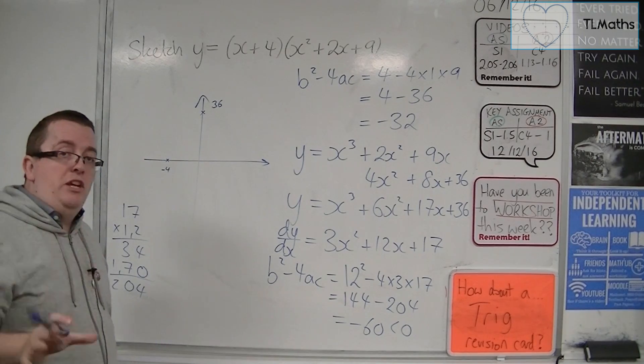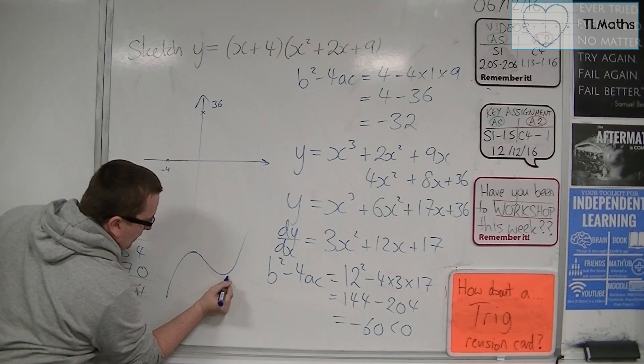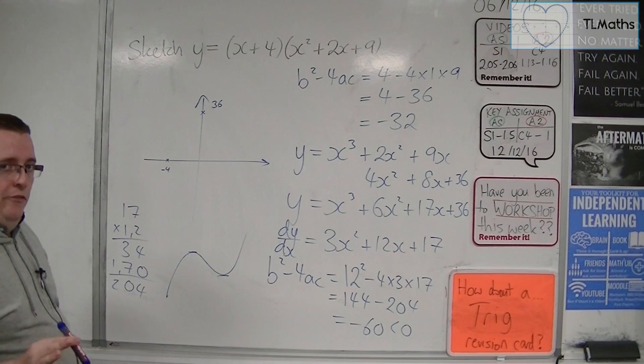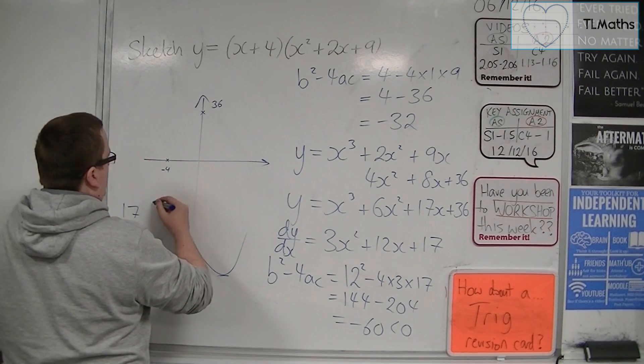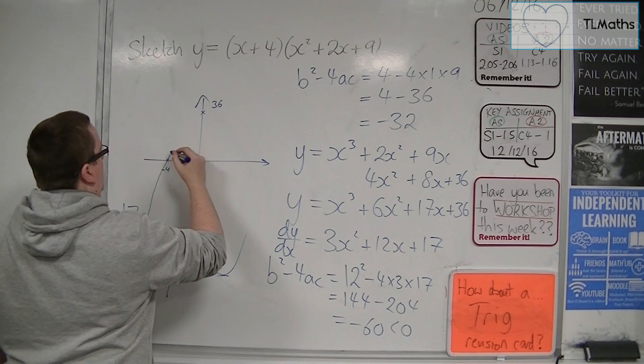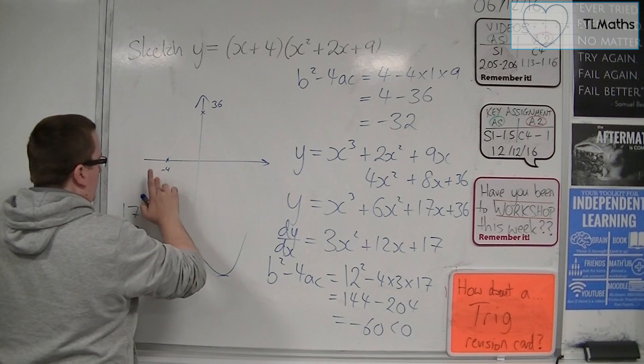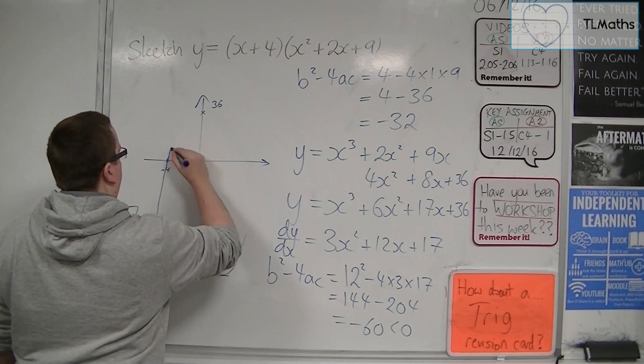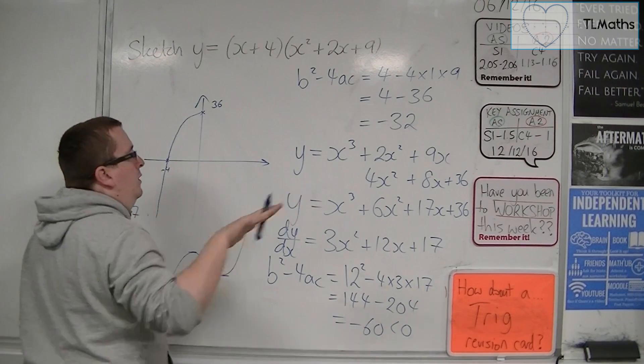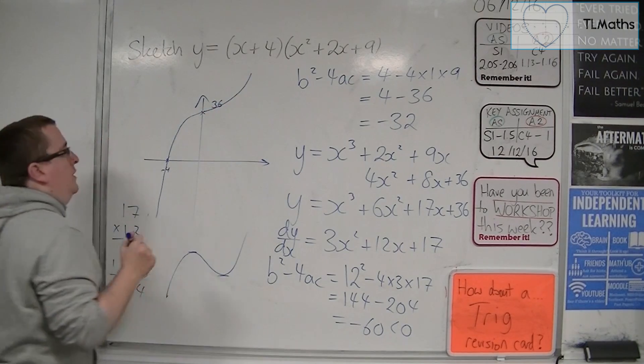So that means that there are no solutions to dy by dx equals 0, which means that there are no stationary points. So the curve does not make this shape. That would mean that there are stationary points there and there. So at no point does this curve come back on itself. At some point, the curve must be going through minus 4. And it must also come round. I would expect it to probably be a little bit steeper than that. So let's try that again. I would imagine it does something like that. But it's never going to get to that horizontal part of the curve because there's no stationary points. And so, thereafter, it must just keep on increasing.